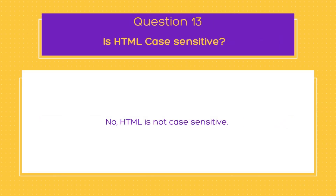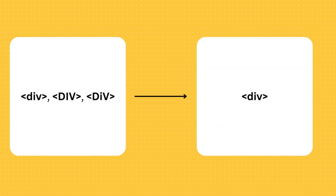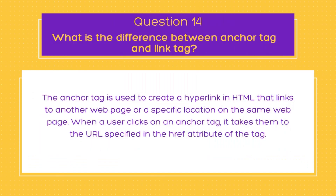The next question is: is HTML case sensitive? The answer is no — HTML is not case sensitive. HTML tags, attributes, and values are not case sensitive, meaning you can write them in uppercase, lowercase, or a combination of both, as shown in the example here. However, it is best practice to use lowercase for HTML tags and attributes to enhance code readability and maintain consistency. On the other hand, the content within HTML elements, such as text, is case sensitive and will be displayed as entered.